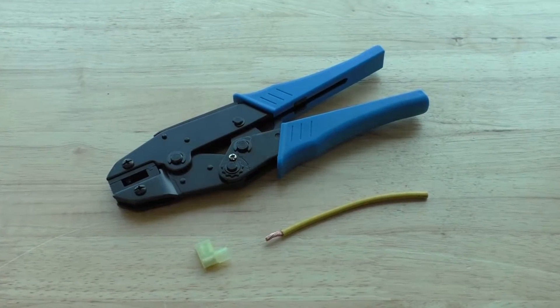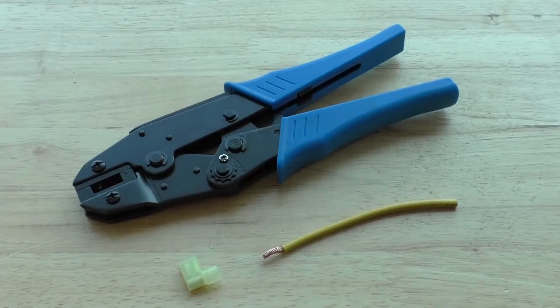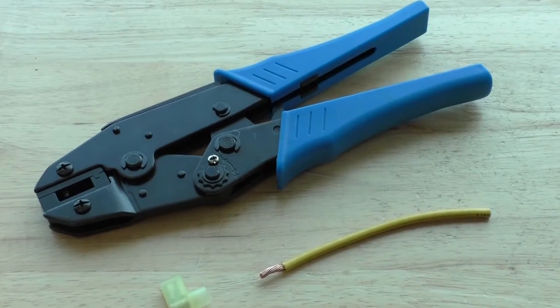What's up guys, today we're looking at our FDT-158 12-10 gauge insulated flag terminal crimping tool.